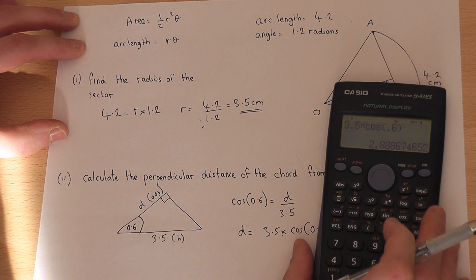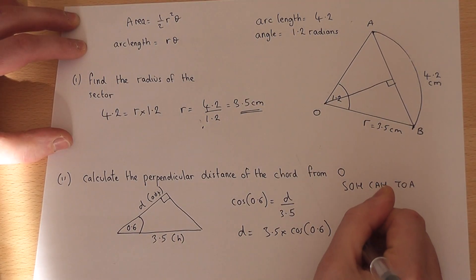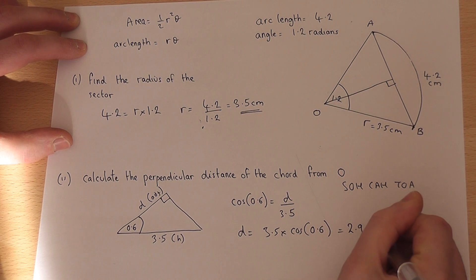I know I'm in radians due to the R on the display. Press Enter, and the answer is 2.9 to 1 dp. So d equals 2.9 centimetres to one decimal place.